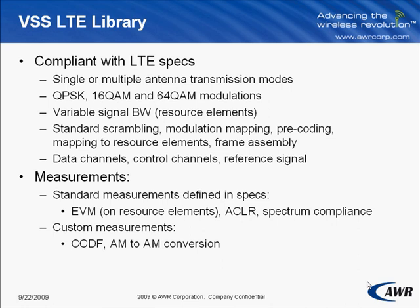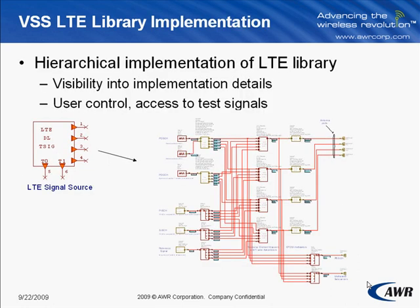Such measurements include error vector magnitude, or EVM, which can be measured on the whole signal or on certain resource elements, ACLR using the standard signal bandwidths and filter settings, and spectrum compliance. VSS allows users to customize any of these measurements, as well as add a variety of custom measurements such as CCDF, AM to AM conversion, etc. The LTE library is implemented using hierarchical designs, which provide users with visibility into implementation details, and the ability to even modify these modules according to their needs.